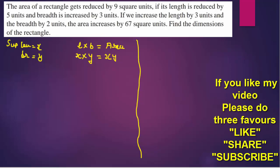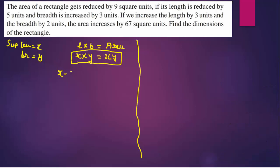Now they say the area gets reduced by 9 square units if the length is reduced by 5 and the breadth is increased by 3. So we write (x minus 5) into (y plus 3), and this equals the area reduced by 9, giving us xy minus 9. Let us solve this to get our first equation.